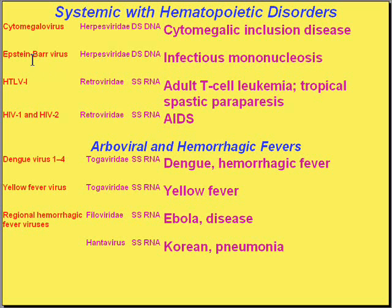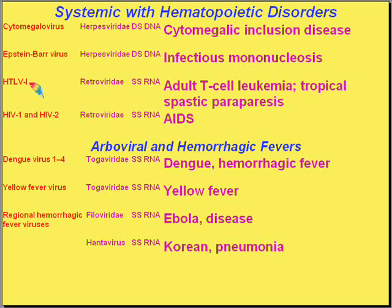Epstein-Barr virus, known for its involvement in Burkitt's lymphoma, is the cause of infectious mononucleosis. Before HIV got its name, it was called HTLV3, and it wouldn't have been called HTLV3 if there wasn't an HTLV1 and 2. HTLV1, like AIDS, is a single-stranded RNA virus and causes many adult T-cell leukemias. The third virus in this family wound up being called HIV — now generally HIV 1 and 2 — originally HTLV3. We are going to get a big presentation on AIDS.